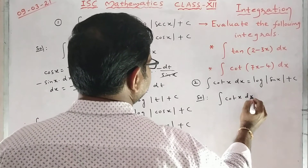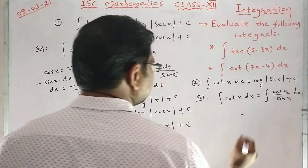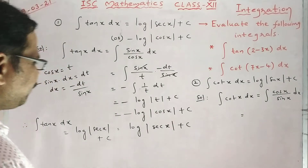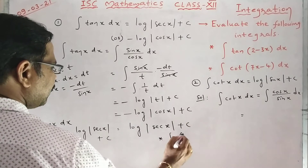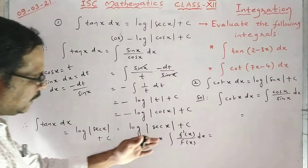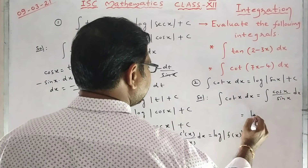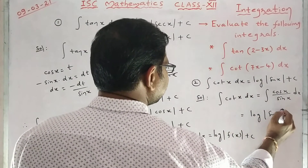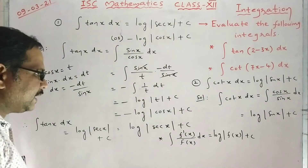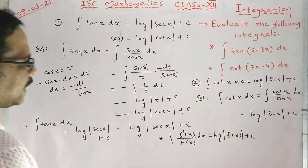Integral cot x dx equals integral — cot means, in basic trigonometry, cos x by sin x. Clearly it looks like f dash x by f of x. I have one formula: integral f dash x upon f of x dx equals log mod f of x plus c. So here, log mod — what is f of x? Sin x plus c. Directly we can write that, because sin x derivative is cos x. It looks like f dash x by f of x, so log mod sin x. By using these two formulas, we can do the problems.